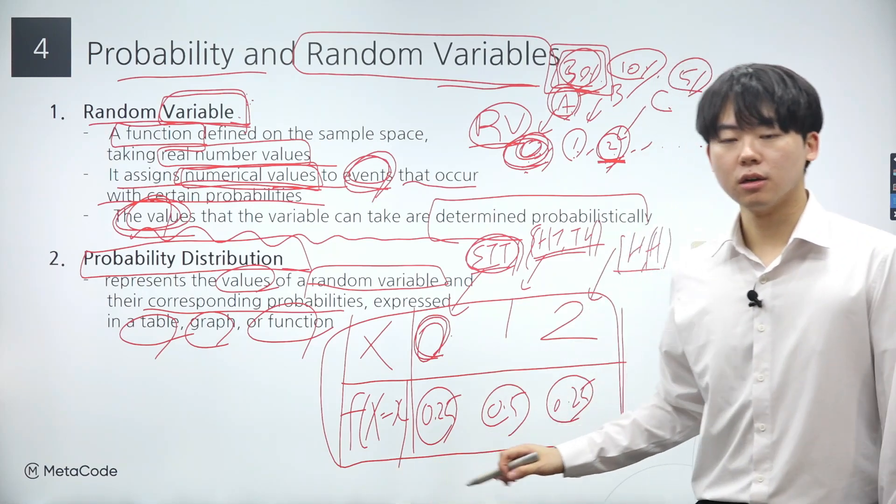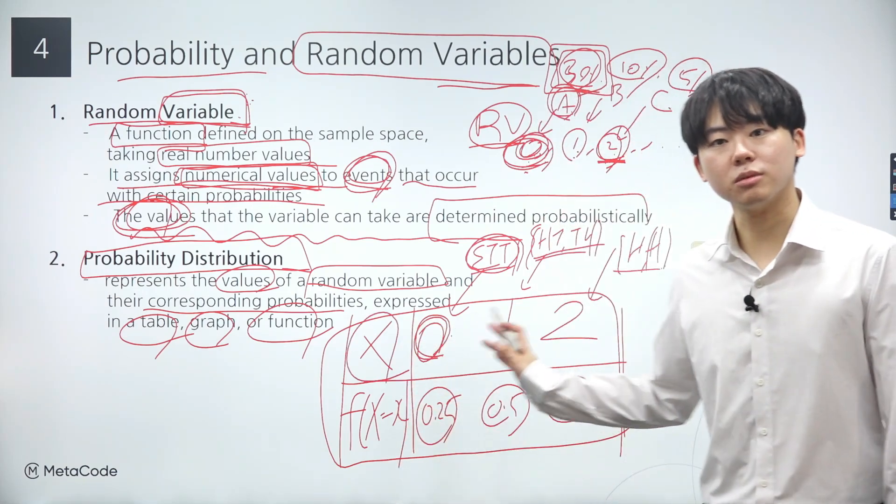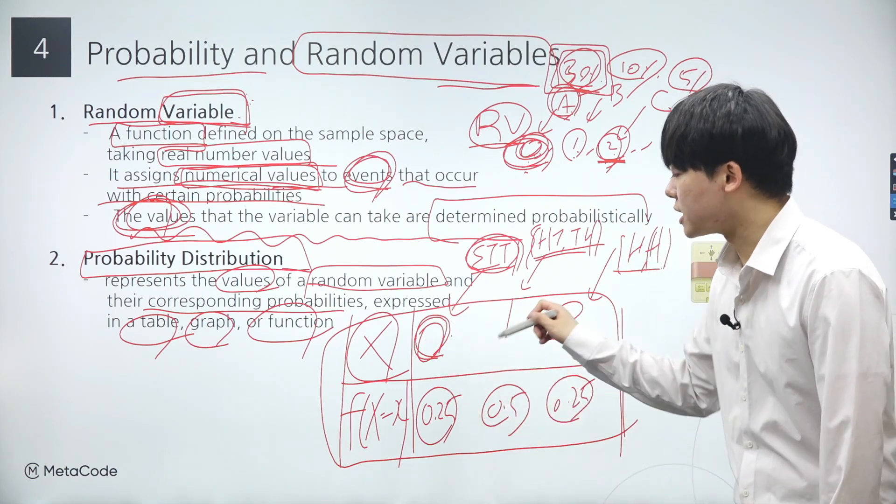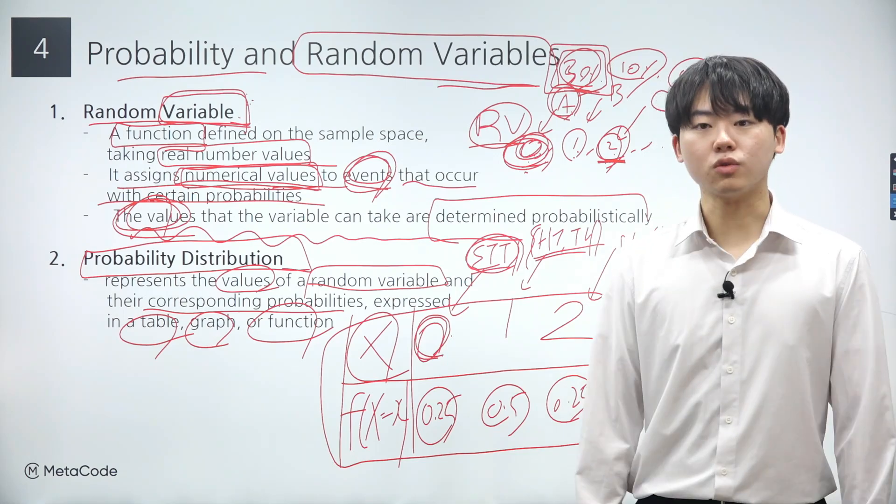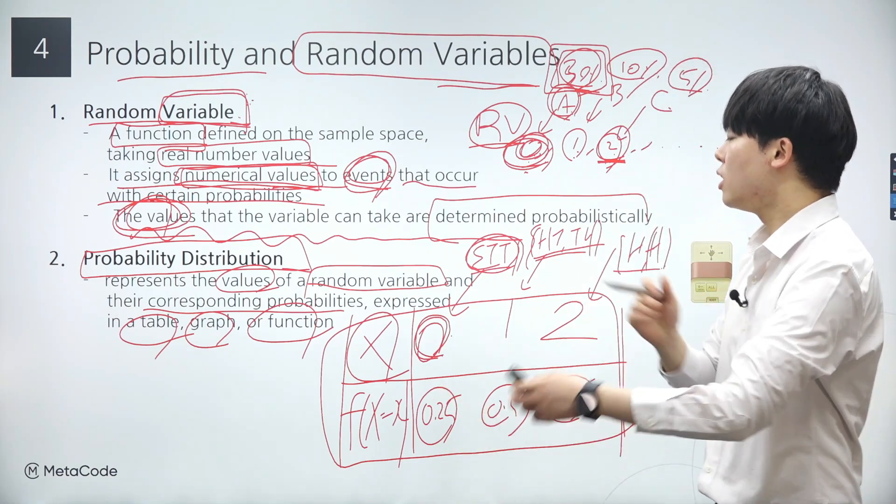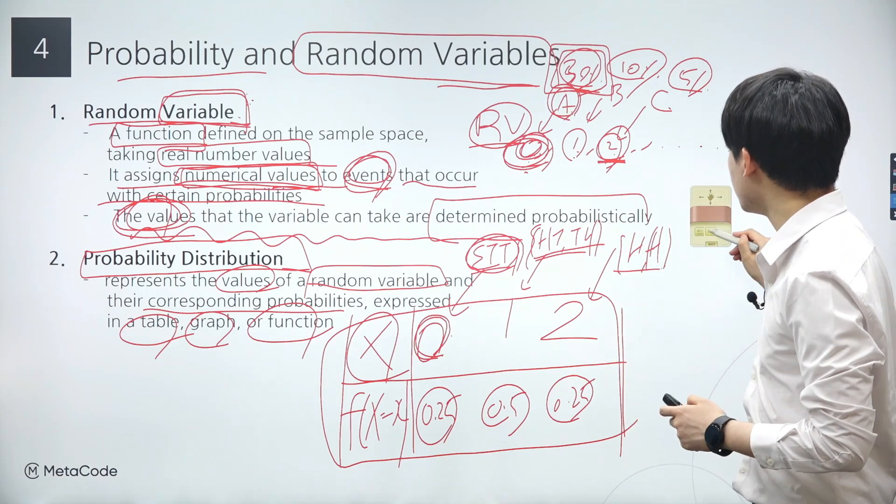This table itself embodies the probability distribution. So if you're asked to determine the probability distribution of a random variable, creating a table like this is the way to go. While equations can also be used to represent the same information, both methods are equally effective in conveying the underlying probabilities.